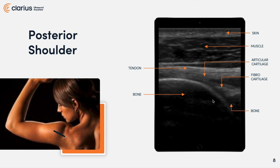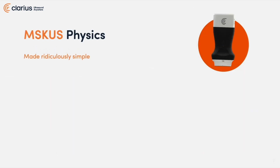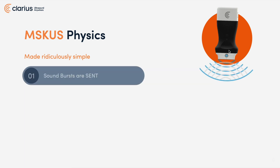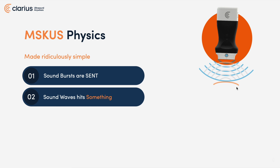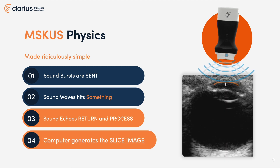How ultrasound engineers generate pictures simply from sound is so far beyond my understanding that I'm going to refer to something I call MSKUS physics made ridiculously simple. I'm using Clarius's version 2 high definition L15 to demonstrate the actual probe. From this probe, sound waves are transmitted. Those sound waves leave the probe, strike something — in this case a thing of orange — and then ripple back and echo. Those echoes are then processed based on time and intensity in the actual device. And then from the work of magic from the engineers comes an actual image that shows up on our iPhone or whatever device we are sending this Wi-Fi signal to.